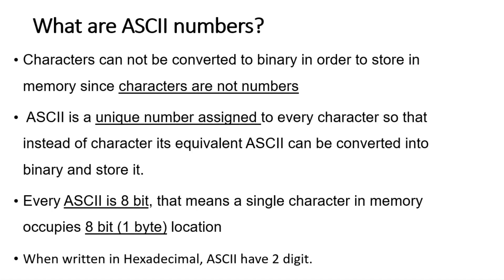We do not have a particular method to convert any character into binary data because characters are not numbers like hexadecimal, decimal, or octal. So every character is assigned a unique number. Whenever a character has to be stored in memory, instead of the character itself, that unique assigned number is considered, converted into binary, and stored. Such assigned numbers are called ASCII. ASCII numbers are standard numbers — every character you see on the keyboard or use in any programming language has a unique ASCII number assigned to it.